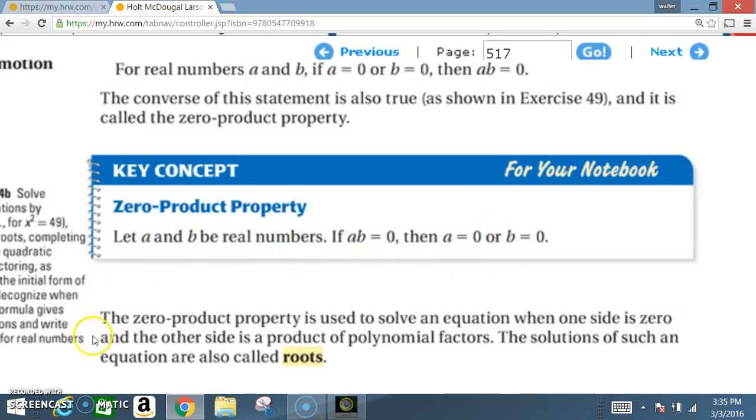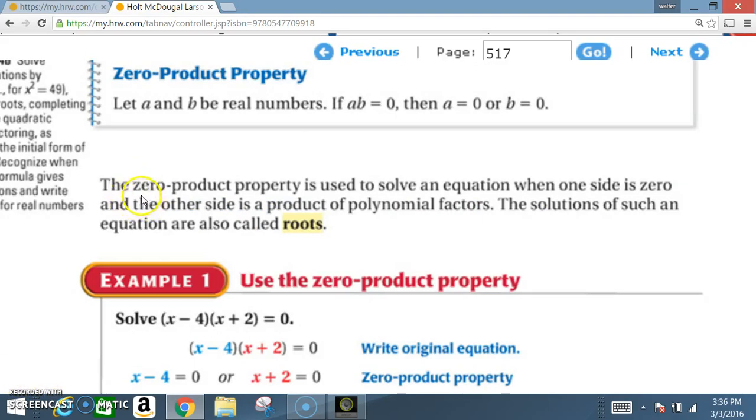Let a and b be real numbers. If a times b equals 0, then a is 0 or b is 0. That means that a has to be 0 or b has to be 0.